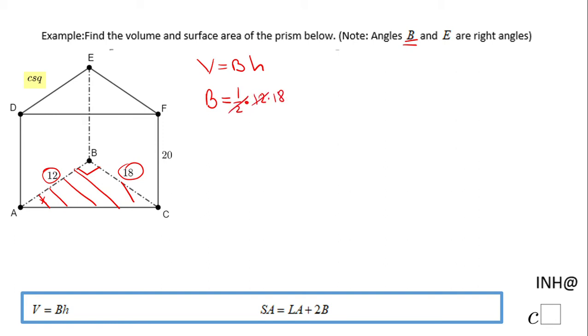I can simplify here by 2, so I have 6 times 18, so area of the base will be 6 times 18, which is 108 square units.